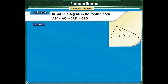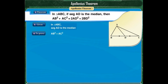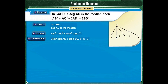We are going to prove this theorem for the acute angled triangle using the application of the Pythagoras theorem for an acute angled triangle. In triangle ABC, segment AD is the median and we have to prove AB squared plus AC squared is equal to 2AD squared plus 2BD squared. Let us draw a segment AE which is perpendicular to side BC, where point E lies between points B and D.